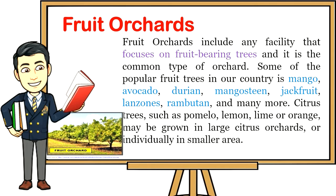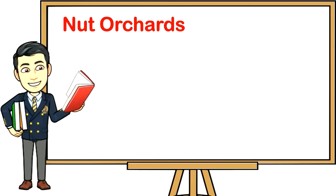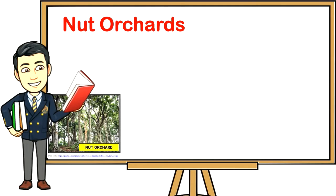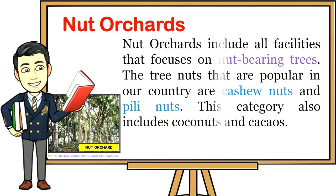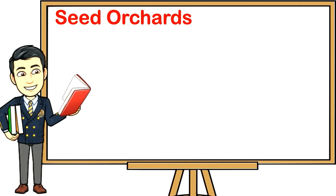Nut orchards include all facilities that focus on nut-bearing trees. The tree nuts that are popular in our country are cashew nuts and pili nuts. This category also includes coconuts and cacao.